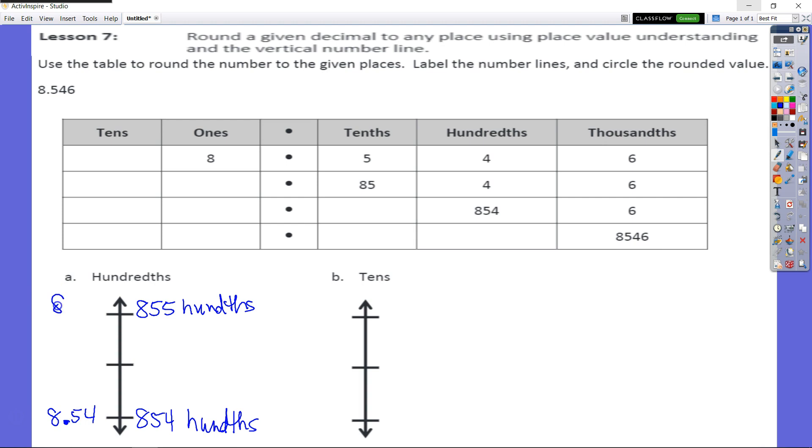And of course, 8 and 55 hundredths is equal to eight wholes and 55 hundredths. So now we need to find our midpoint. What's in between 854 hundredths and 855 hundredths? Or what's in between eight and 54 hundredths and eight and 55 hundredths?